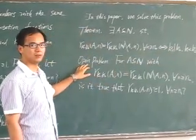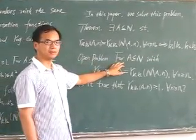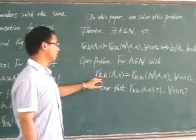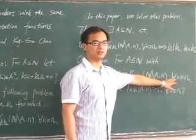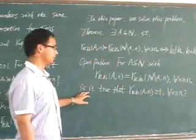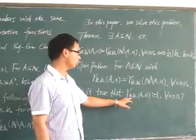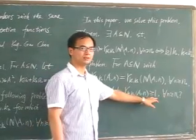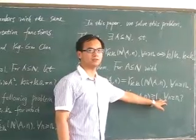We also pose the following open problem. For a subset A of N with this equality for all sufficiently large integers N, is it true that rk1,k2(A,N) greater than or equal to 1 for all sufficiently large integers N?